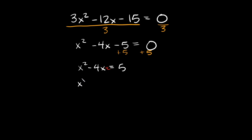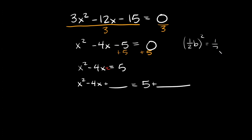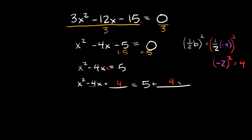Rewrite as x² - 4x + ___ = 5 + ___. Using ½b squared: b = -4, so ½ × (-4) = -2, and (-2)² = 4. Plug in 4 on both sides.